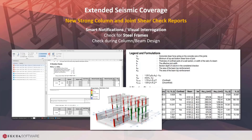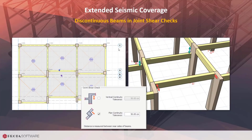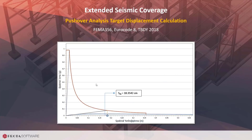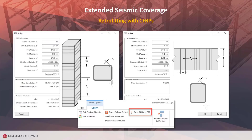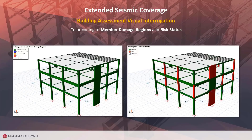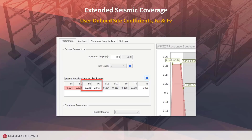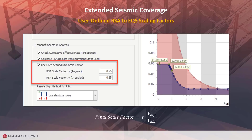Specify the non-structural members and their properties and ProtoStructure will automatically calculate the story accelerations and forces depending on the analysis type. In addition to new code coverage, the strong column weak beam and joint shear check reports are rewritten from scratch to include more visual components with intelligent notifications. ProtoStructure automatically compares the response spectrum-based shear to the equivalent static-based shear and scales up internal forces and displacements.